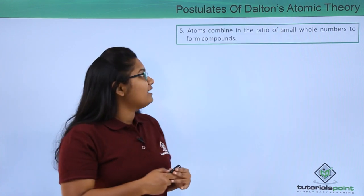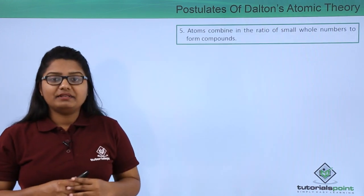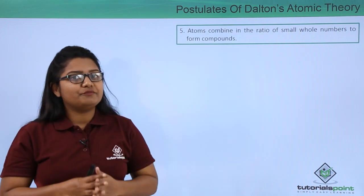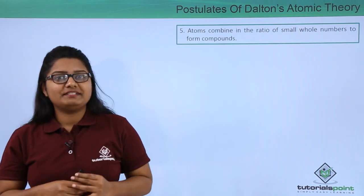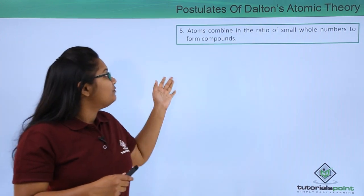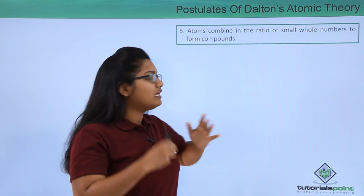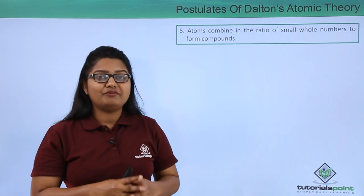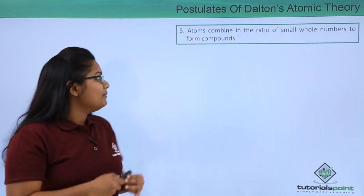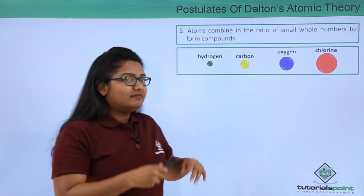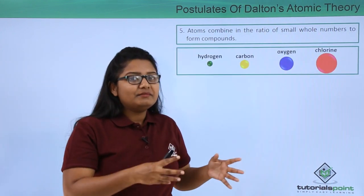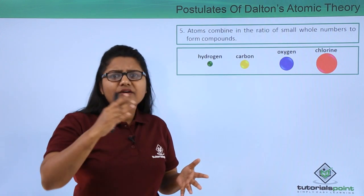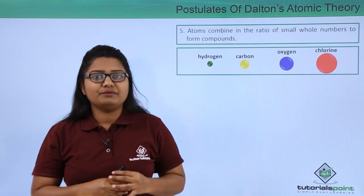The fifth and sixth postulates of Dalton's atomic theory basically speak about the combination of atoms to form molecules. The fifth postulate says that atoms combine in the ratio of small whole numbers to form compounds, meaning atoms always combine together in some small whole number ratios to form a resulting compound.